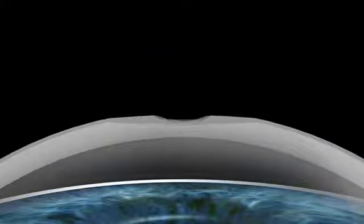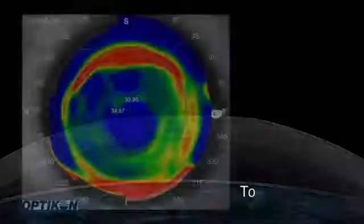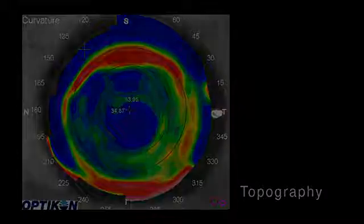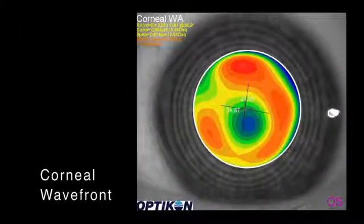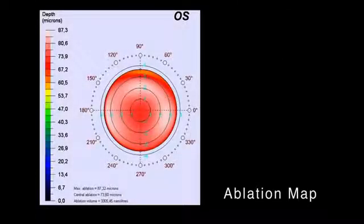TransPRK applied to regular corneas provides efficacious, safe, stable, and reliable results. Transepithelial approaches allow maximum correspondence between the corneal topography and the ablation profile. The sophisticated Amaris software compensates for the slight differences in photoablative rates of the stroma and the epithelial tissue.